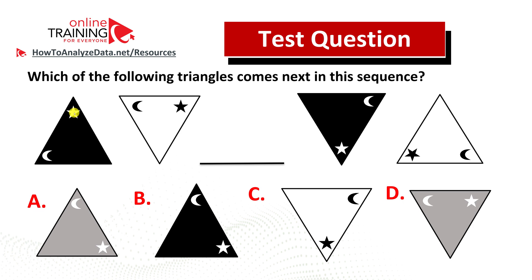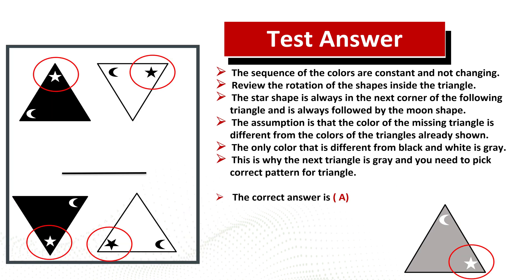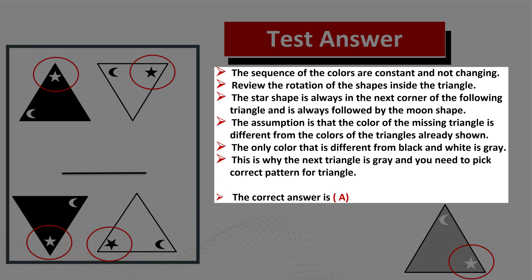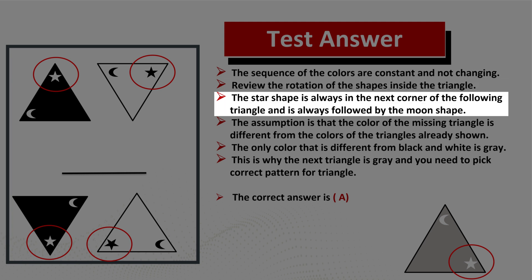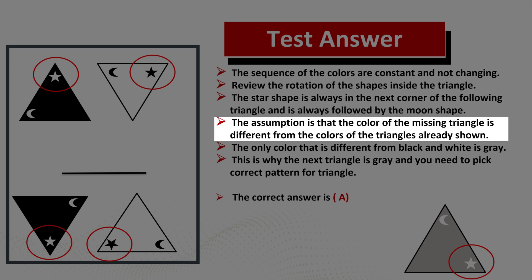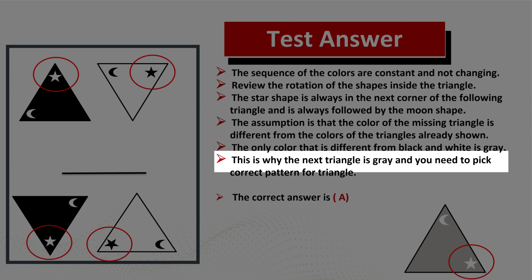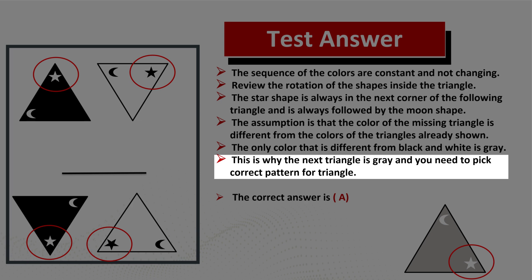You see moon and star in the leftmost triangle, then moon and star on top, then moon on top and star at the bottom, and then both moon and star at the bottom of the triangle. Now let's jump to the solution. The sequence of colors is constant and not changing, and the star shape is always in the next corner of the following triangle, always followed by the moon shape.